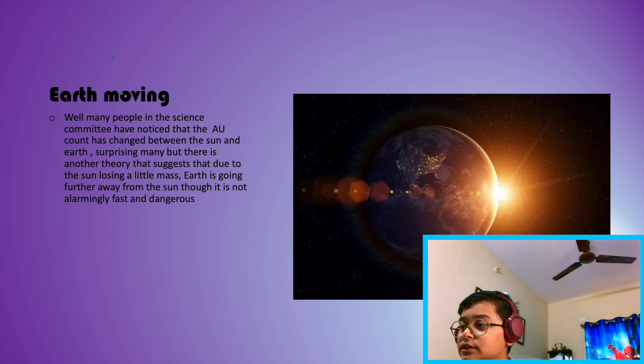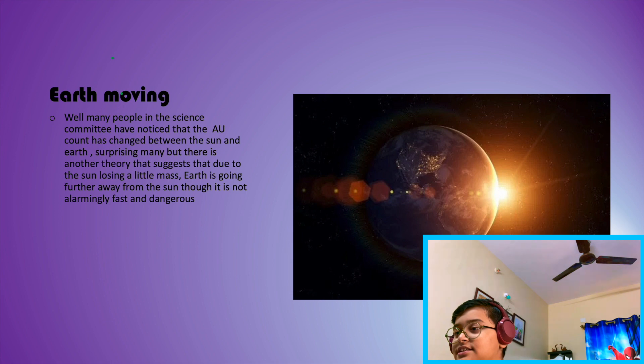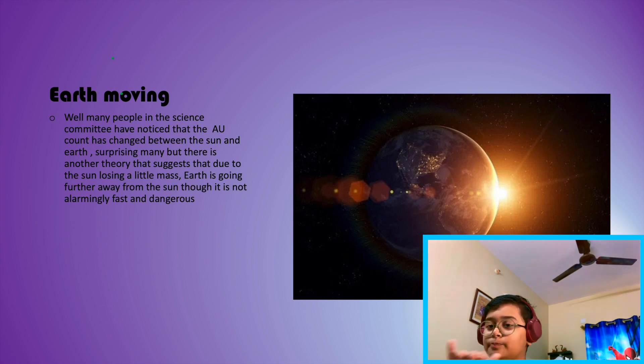Earth moving. Many people in the science community have noticed that the astronomical unit count has changed between the sun and Earth, surprising many. But there's another theory that suggests that due to the sun losing a little mass, Earth is going farther away from the sun. Though it is not alarmingly fast. Just a little ground, basic setup for my theory to start.